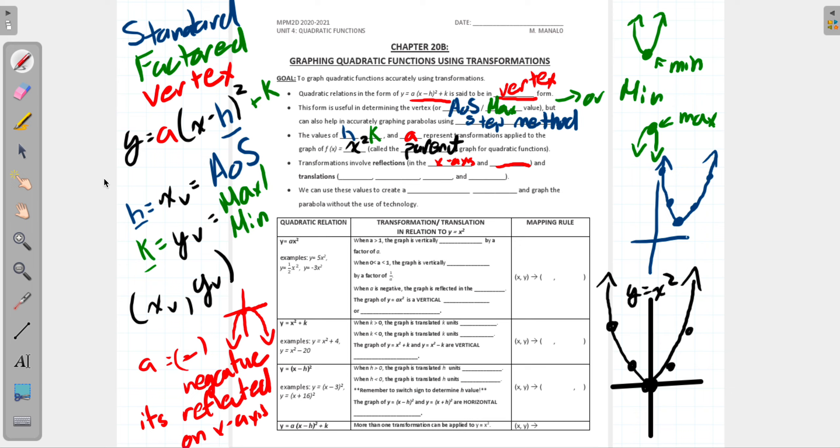We can use these values to create a blank and a blank and graph the parabola without the use of technology. Well, we can get the vertex, and we can use the step method to graph it. I think they're looking for very specific language here, but the general idea is all of this information I've shown you plus the little demo we did on Desmos. With that being said, let's do a quick pause.